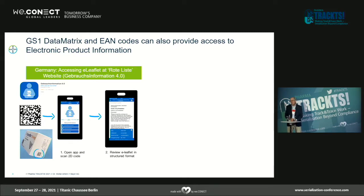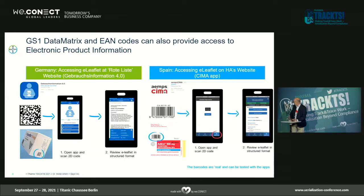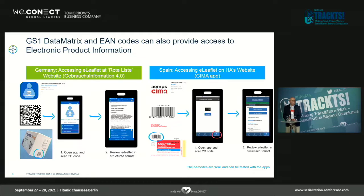My first example is from Germany — the app developed by VFA, the German manufacturer association, together with member companies: the Gebrauchsinformation 4.0, or product information 4.0. You can download the app from the app store and scan the code, though download appears restricted to the German app store. Another example is from Spain, where the authorities' affiliated company CIMA offers an app that allows scanning of linear barcodes, and they are currently planning to extend its functionality to scan 2D data matrix codes as well.